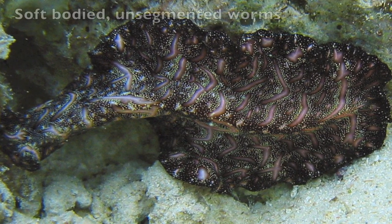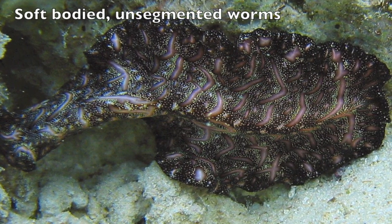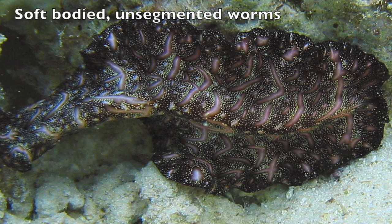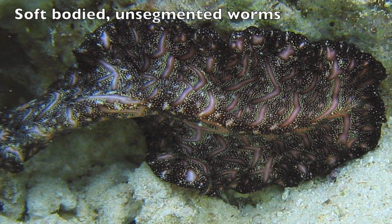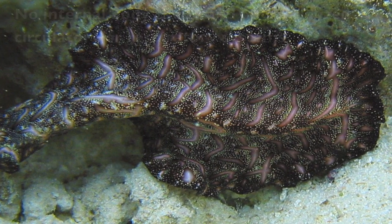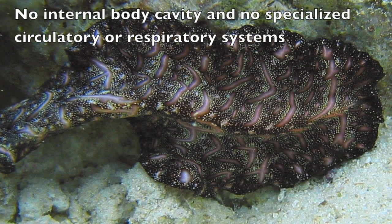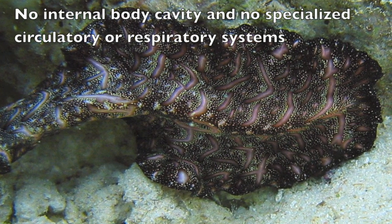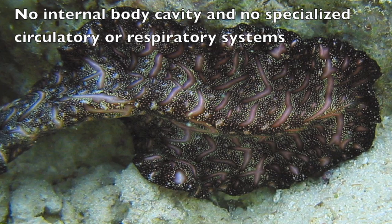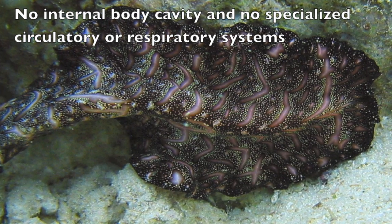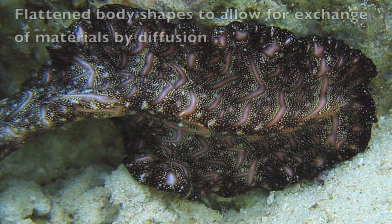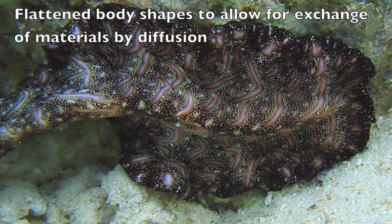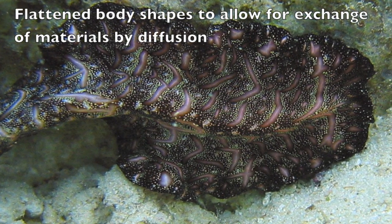Platyhelminthes, or flatworms, are soft-bodied, unsegmented worms. They have no internal body cavity and no specialised circulatory or respiratory systems. Their flattened body shape allows for exchange of materials by diffusion.